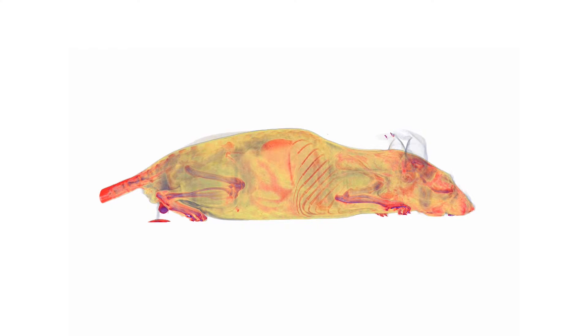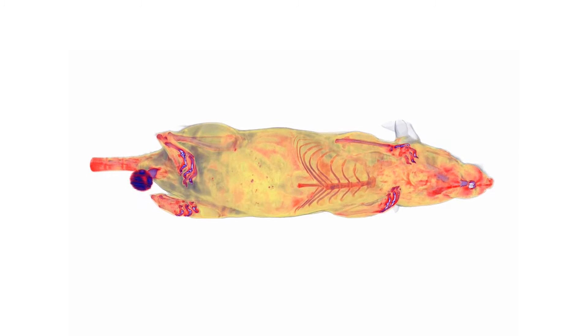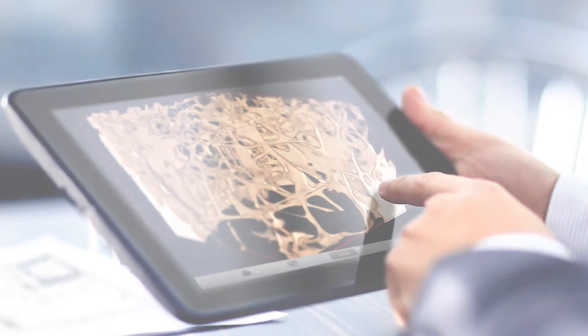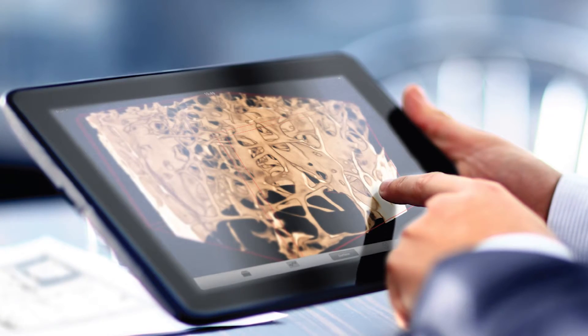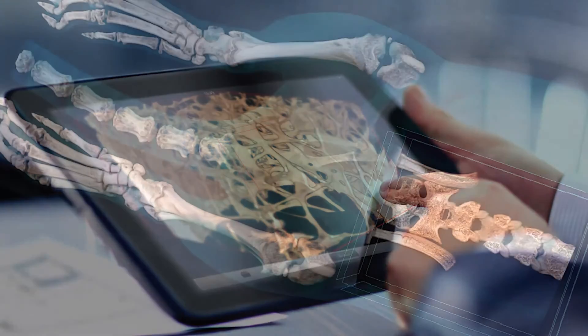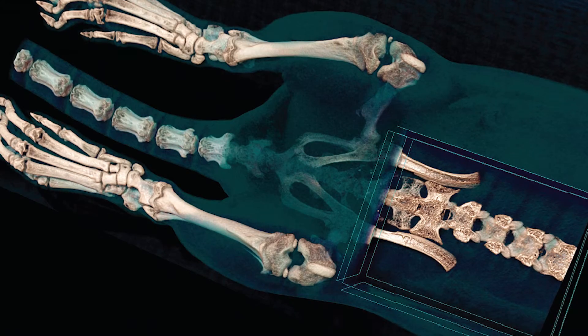Increasing the contrast between materials increases the number of ways in which biomedical researchers can use the technology. By making the scans shorter, it can be combined with other imaging technologies such as PET or SPECT or optical imaging or MRI. The increased contrast increases the number of things that one can simply see inside the animal.